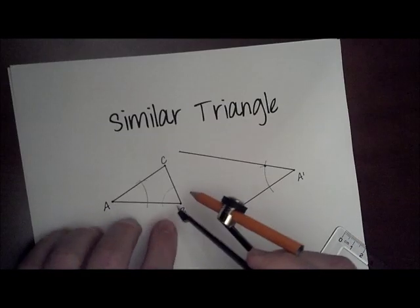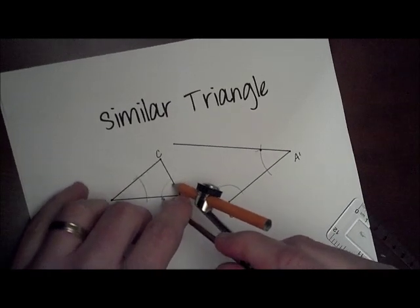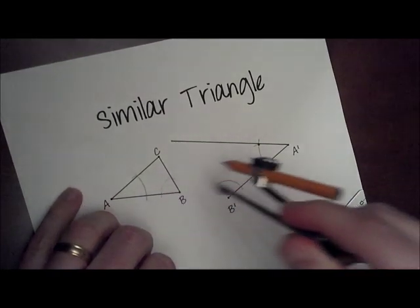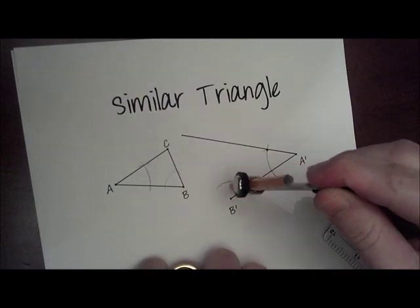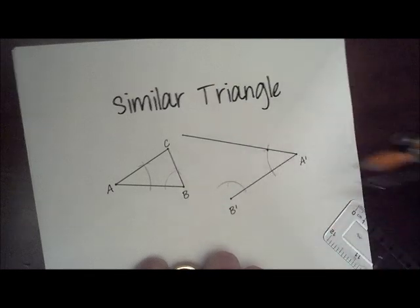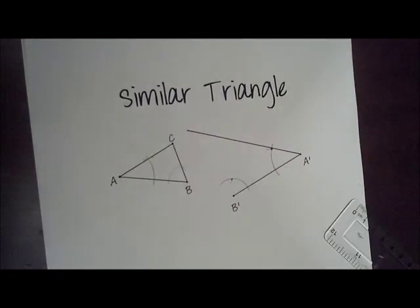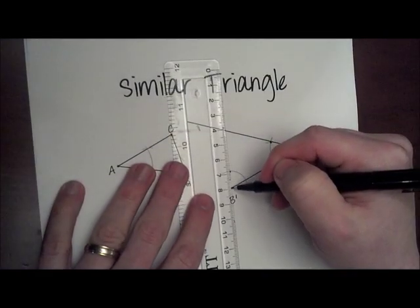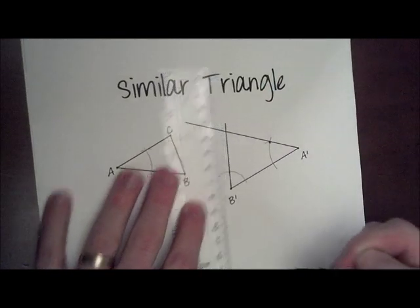We'll measure the fatness at B, and strike an arc to show that we measured it. And we're going to transfer that fatness over to the angle we're constructing at B'. And where those intersect, we're going to draw the other side of our similar triangle. And we just need to make it long enough to intersect the other side.